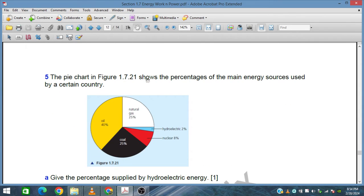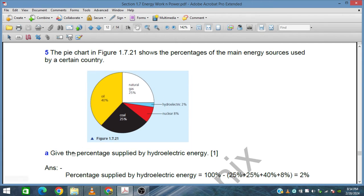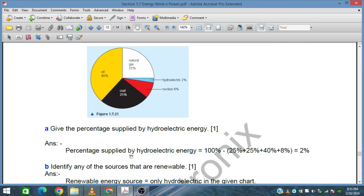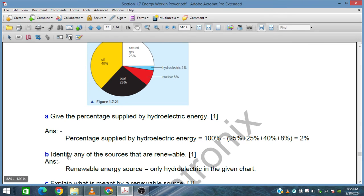This figure shows the percentage of the main energy sources used by a certain country. Give the percentage supplied by hydroelectric energy. Hydroelectric is only 2%. Identify any other sources that are renewable. Only hydroelectric is a renewable source of energy; other sources are consumed energies.